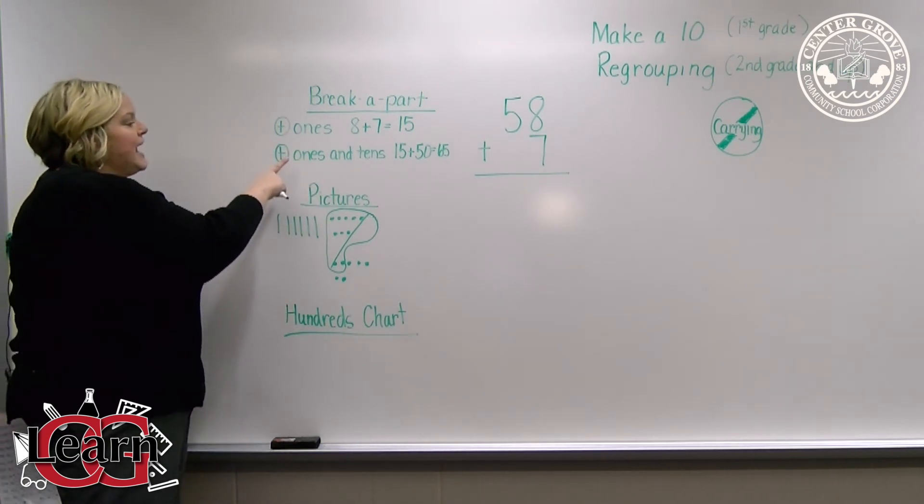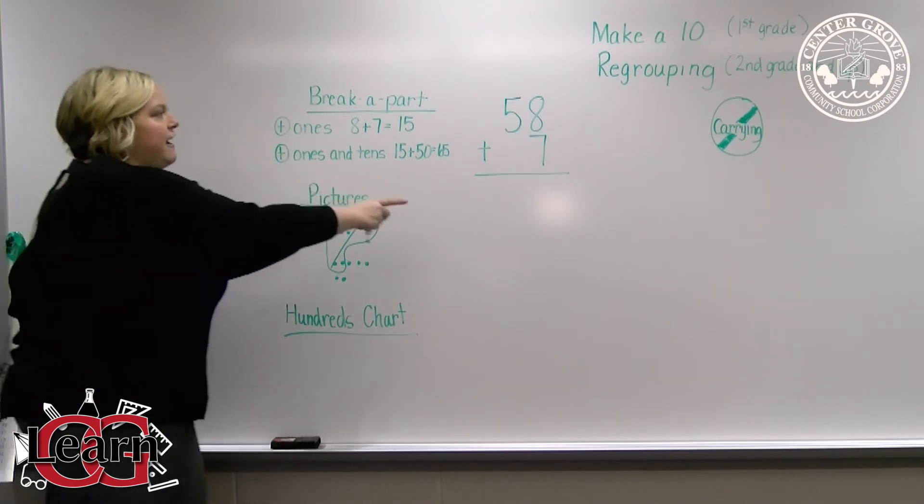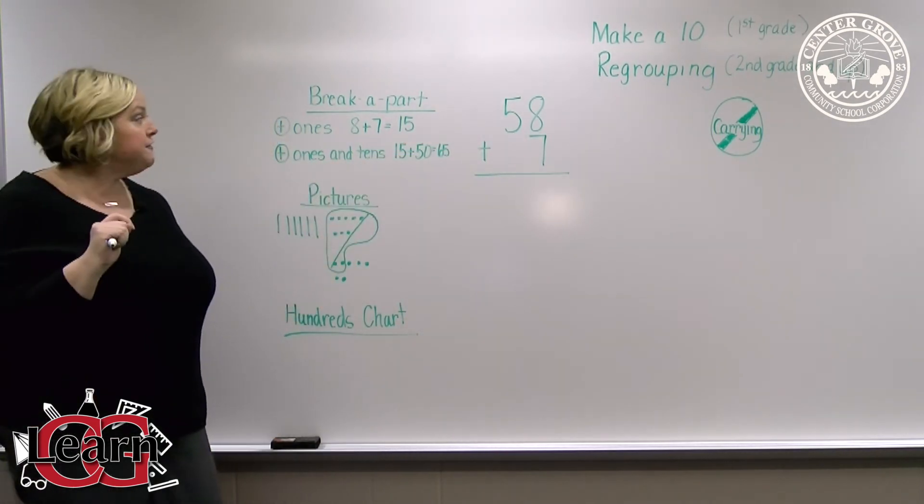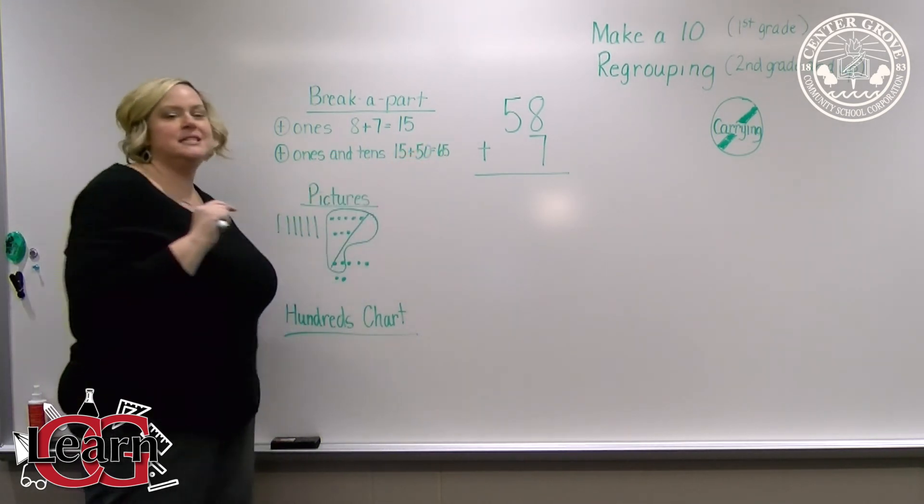And then we're going to add our tens to our ones. We know that five stands for 50. So, 15 plus 50 equals 65.